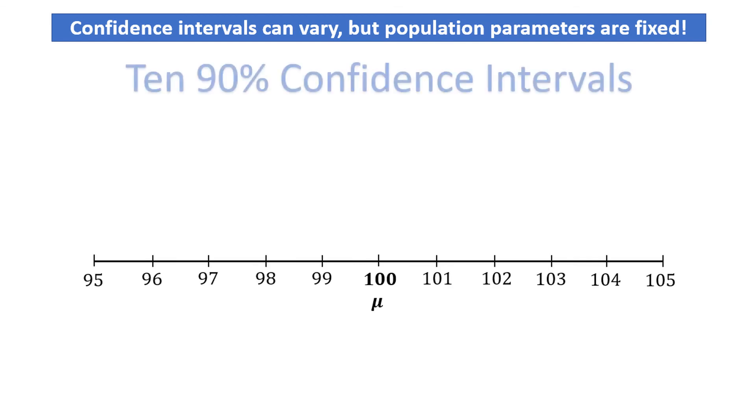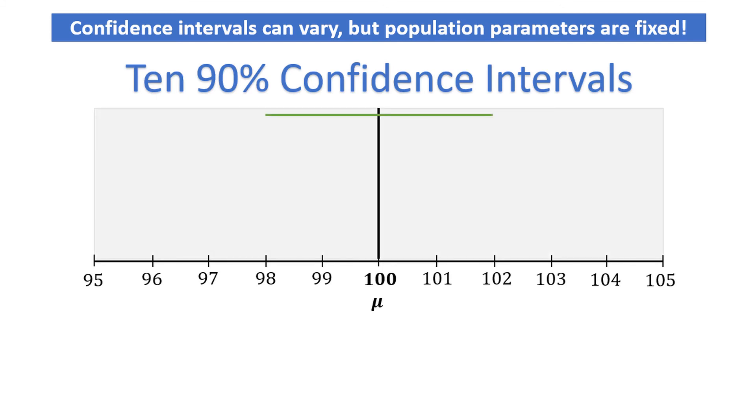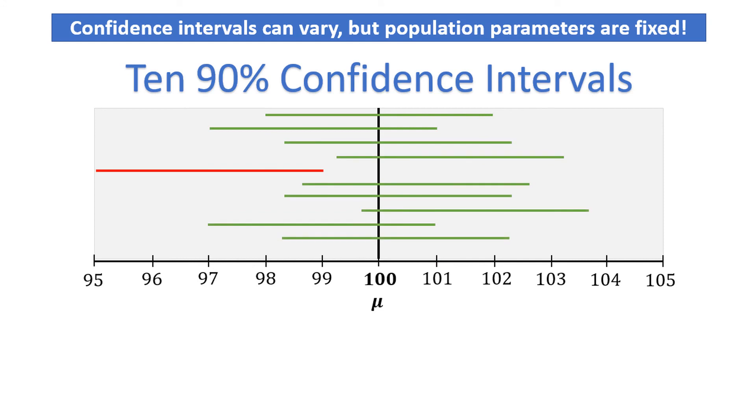Let's look at what 10 90% confidence intervals might look like. We might have one interval that ranges from 98 to 102. I've colored this one in green because it contains the population mean of 100. We might have another one that ranges from 97 to 101. This one isn't centered at 100, but still contains the population mean. On average, in 10 intervals, one of those intervals will not contain the population mean, if the confidence level is 90%. Here we see one interval is from 95 to 99, which does not contain the population mean of 100.